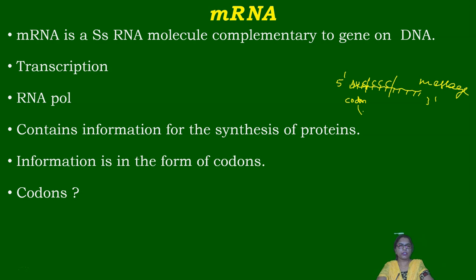These three nitrogen bases are called a codon. Each codon codes for an amino acid, or they may code for a start codon or stop codon. Each codon has a specific meaning. In order to synthesize a protein, every piece of information is present in mRNA — where protein synthesis starts, where it halts, and what amino acids are part of the protein. That is why it is called messenger RNA.